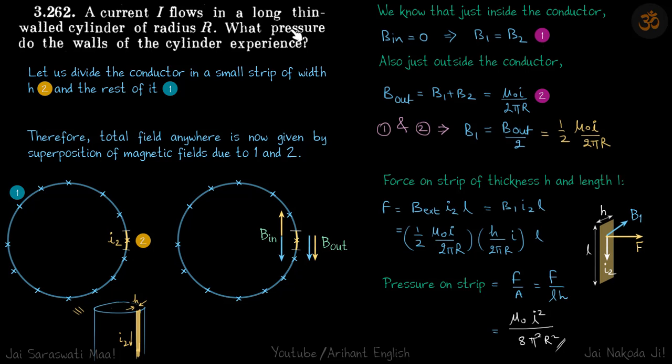Now we are supposed to find the pressure on the walls. For this strip which we have cut, let's find the force on that strip. Then we can divide that by the area of some section of that strip and get the pressure on that particular part of the conductor, which will be the same everywhere.